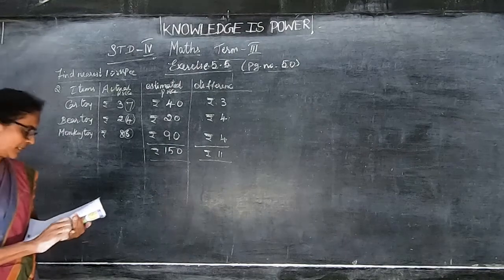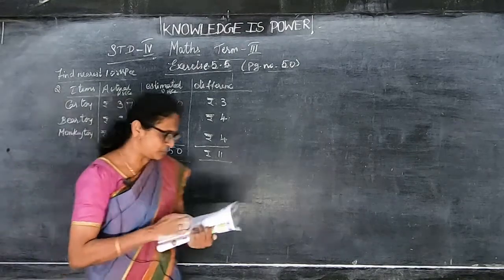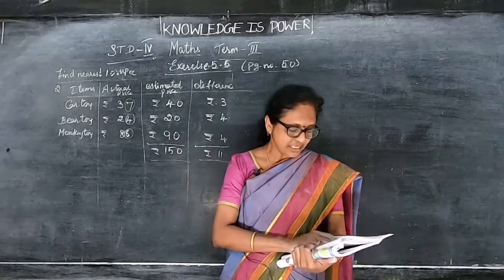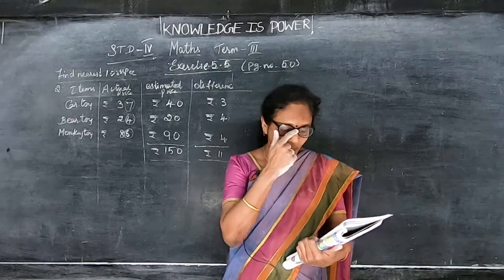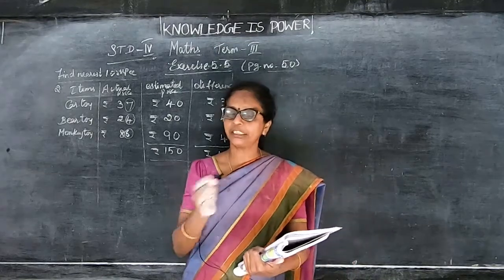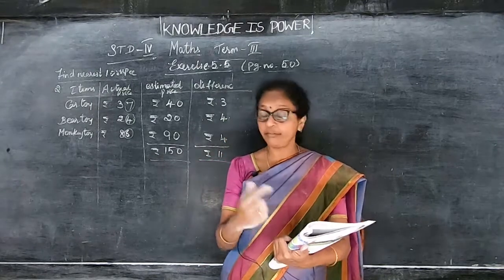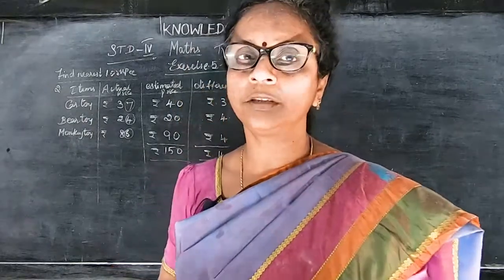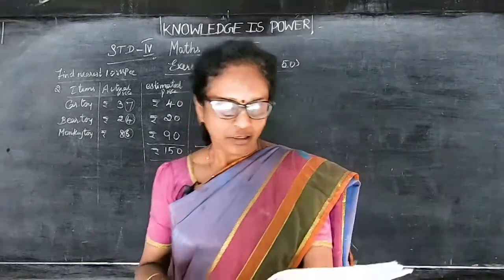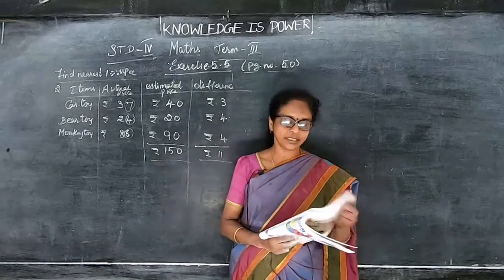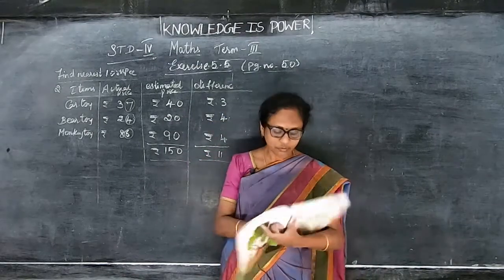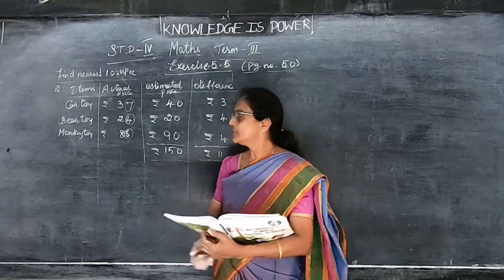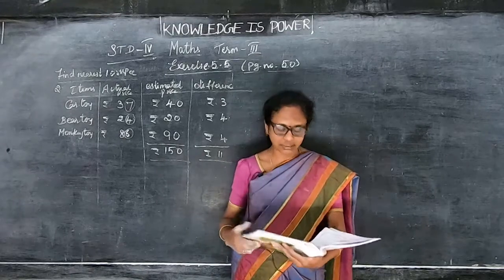Next one involves books — Bharatiyaar book, Gandhi book, Abdul Kalam book, and Kumaran book. Find the estimated cost and differences, estimation nearest to 1 rupee. Copy down everything. We will continue in the next class. Thank you.